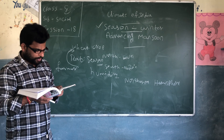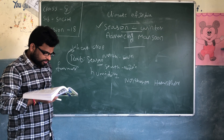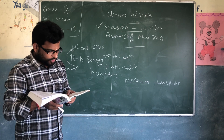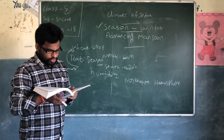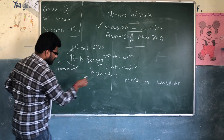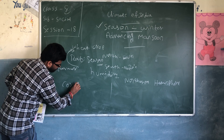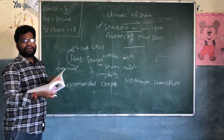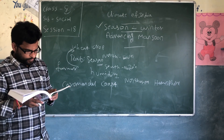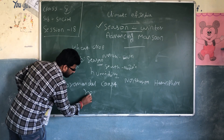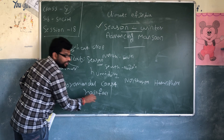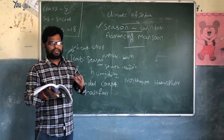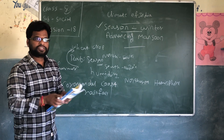The North East Trades blow over India from land to sea, and they are therefore dry. On the North Indian side they bring dry land conditions. However, some amount of rainfall occurs on the Coromandel Coast of Tamil Nadu from these winds. The winds have a strong effect on the Coromandel Coast.